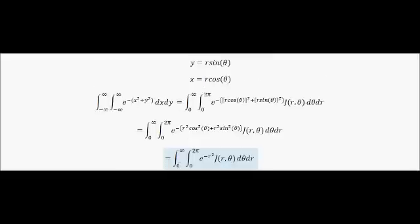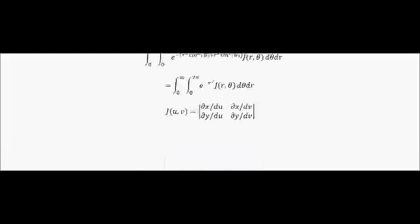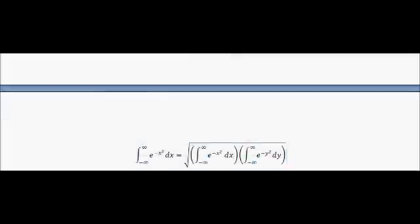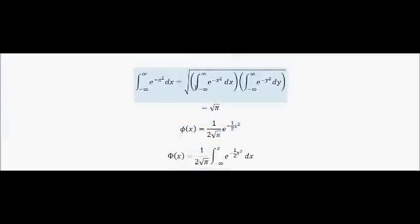Originally we said that the integral of e to the minus x squared dx is equal to the square root of this double integral. So I actually need to take the square root of pi to get the integral. The answer is the square root of pi — so the integral from minus infinity to infinity of e to the minus x squared dx is indeed the square root of pi.